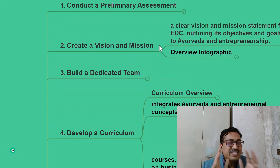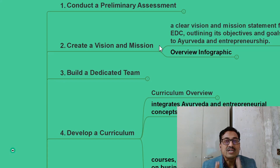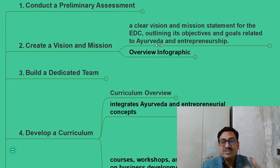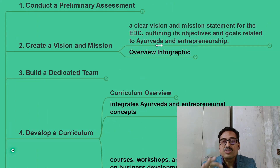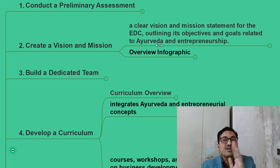The basic thing for setting up any goal or journey is that you need to have a vision and a mission. Create a vision and a mission for your entrepreneurial development cell. There should be a clear vision and a clear mission statement which will outline the objectives and goals related to Ayurveda and entrepreneurship.